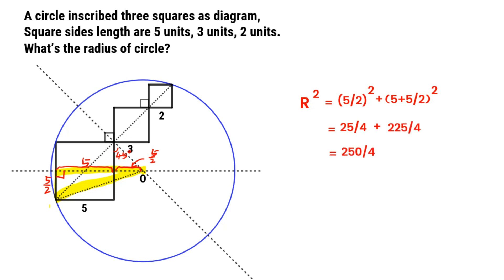It's 50 over 4. So we can get the radius as 5 times square root of 10 over 2. Now we calculated the radius of circle.